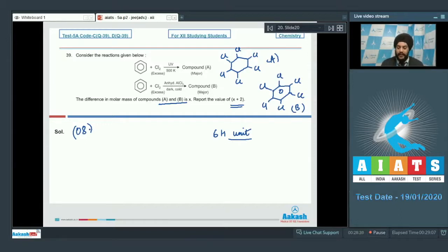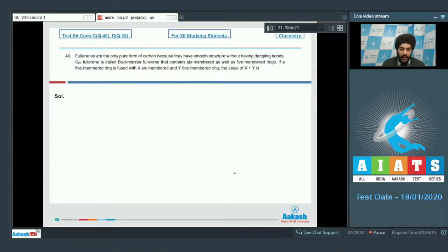Let us look at the last question for this paper, question number 40. Fullerenes are the only pure form of carbon because they have smooth structure without dangling bonds. C60 fullerene is also called buckminsterfullerene that contains six-membered as well as five-membered rings. If a five-membered ring is fused with x six-membered rings and y five-membered rings, the value of x plus y is...